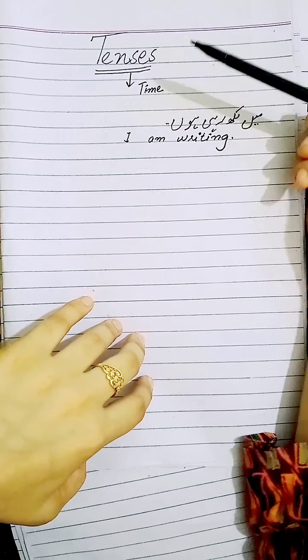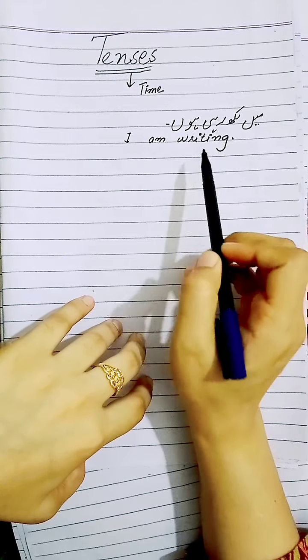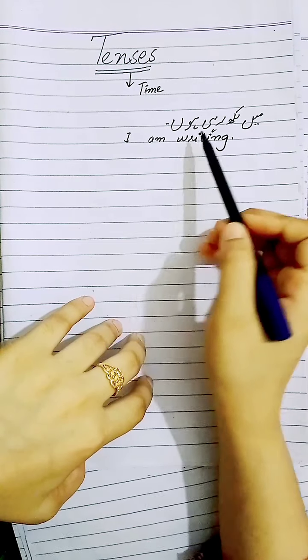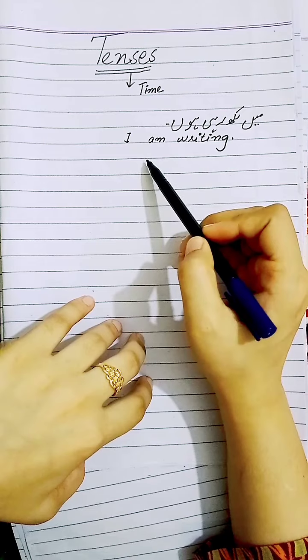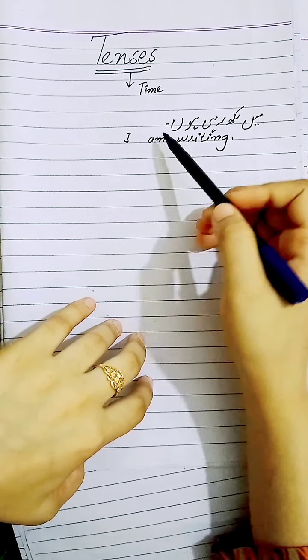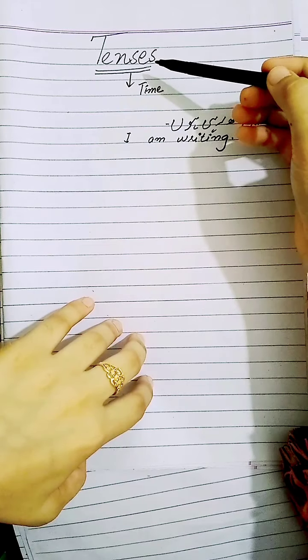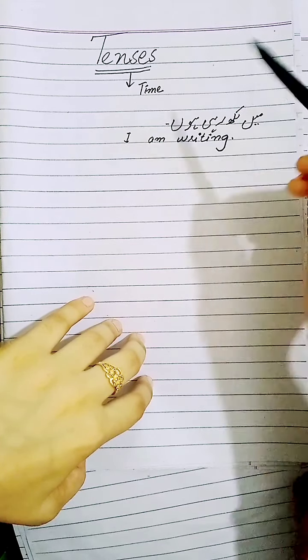Here I have written an example: 'I am writing.' According to the rules of grammar, I have written the translation of this sentence. 'I am writing' — 'رہی ہوں' is showing the present state, meaning this work is currently ongoing, it is continuous. So we can say that tenses tell us the time of the work.